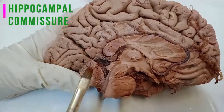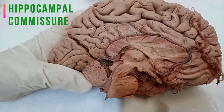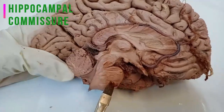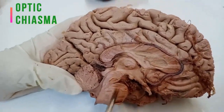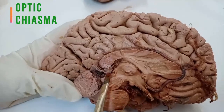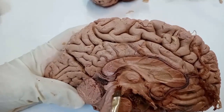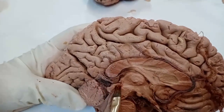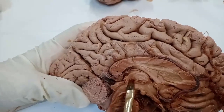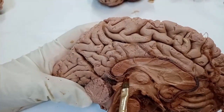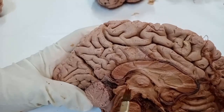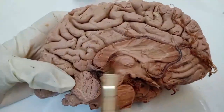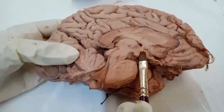We also have the hippocampal commissure, connecting the two hippocampal formations of both sides, and the optic chiasma, which connects the optic nerves of the eyeballs of both sides. So the anterior commissure is here, the pinhead-sized posterior commissure is just above the tectum, then the pineal recess, and above that the habenular commissure.